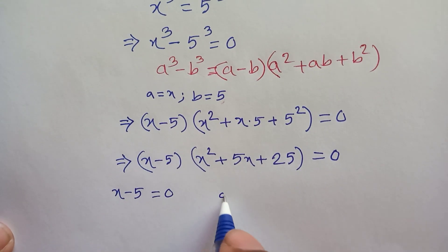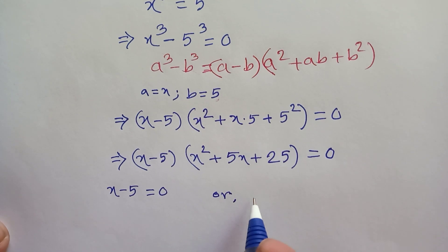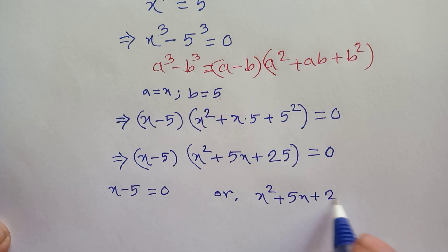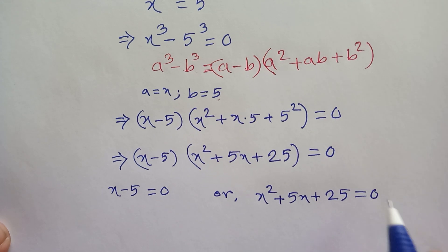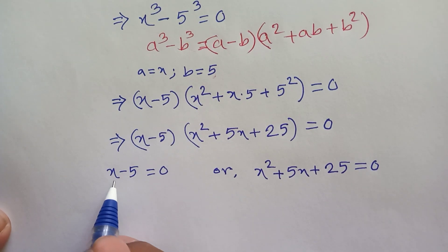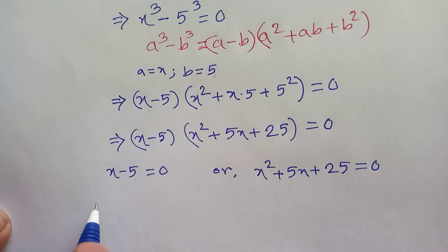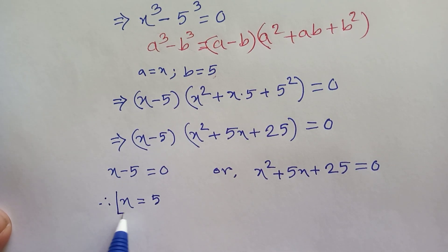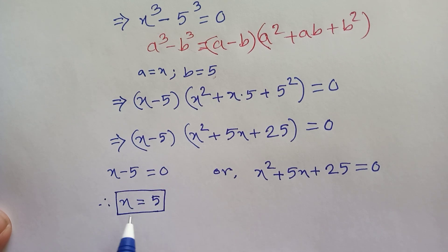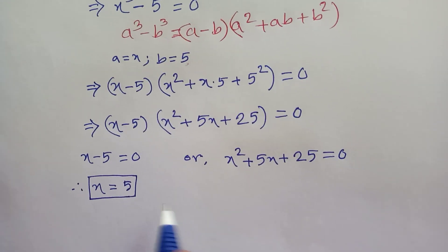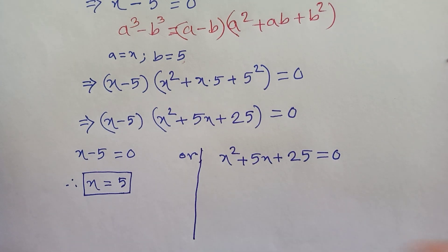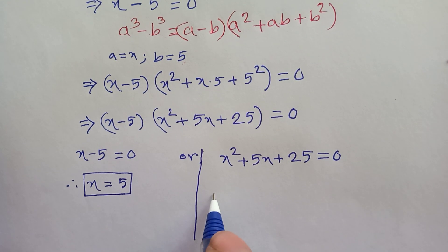...x squared plus 5x plus 25 equals 0. In the first case, x minus 5 equals 0, so x equals 5. That is the value of this equation: x equals 5. In the second case, it is a quadratic equation.